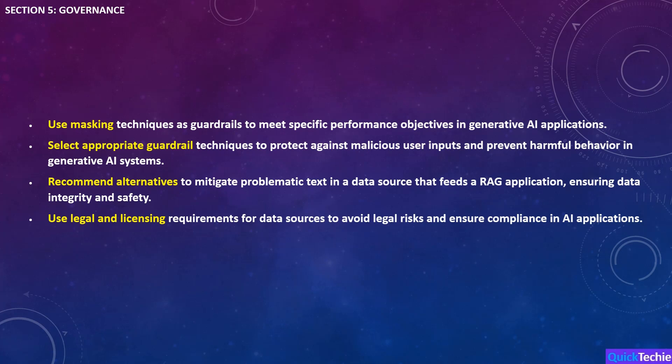In Section 5, we'll focus on governance, a critical part of AI development to ensure applications are safe, compliant, and secure. You'll learn how to apply masking techniques as guardrails to meet performance goals while protecting sensitive data and ensuring privacy. Next, you'll cover guardrail techniques to prevent malicious user inputs, safeguarding AI systems from harmful manipulation. You'll also learn how to recommend alternatives for mitigating problematic text in data sources, maintaining data integrity in RAG applications. Finally, you'll dive into the legal and licensing requirements for data sources, ensuring your AI systems comply with legal standards and avoid risks when handling sensitive data.